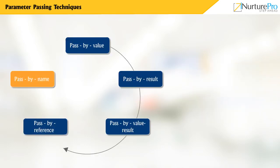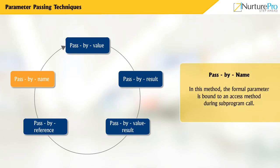Pass by name: In this method, the formal parameter is bound to an access method during the sub-program call. The actual binding, to value or address, takes place until the formal parameter has been assigned. It resembles pass by reference if the actual parameter is a scalar, and resembles pass by value if the actual parameter is a constant expression. This method belongs to in-out mode of transmission, and one of its main advantages is its flexibility.